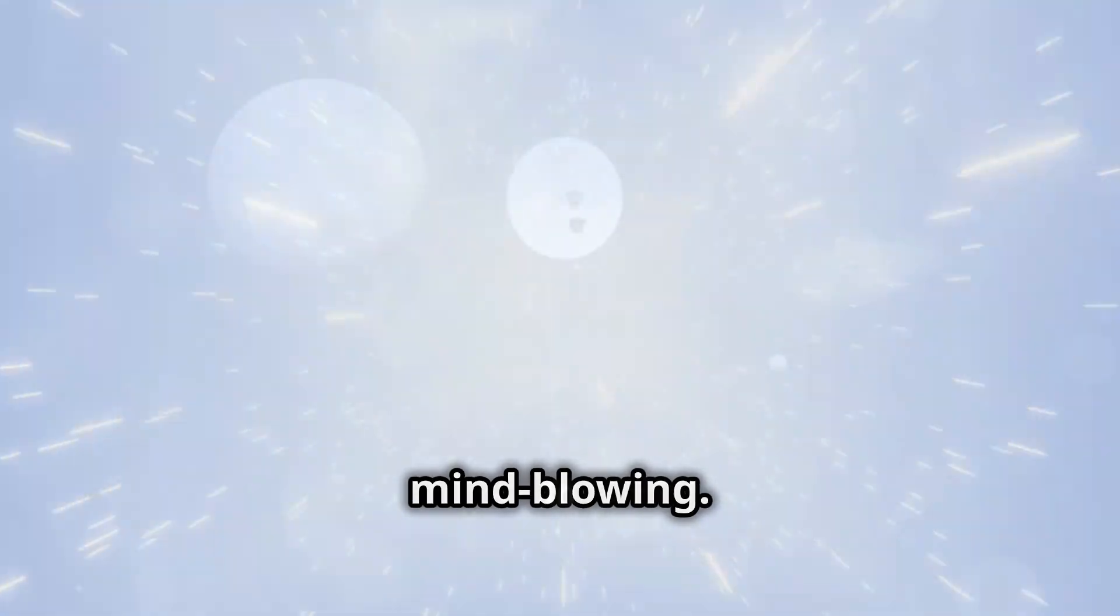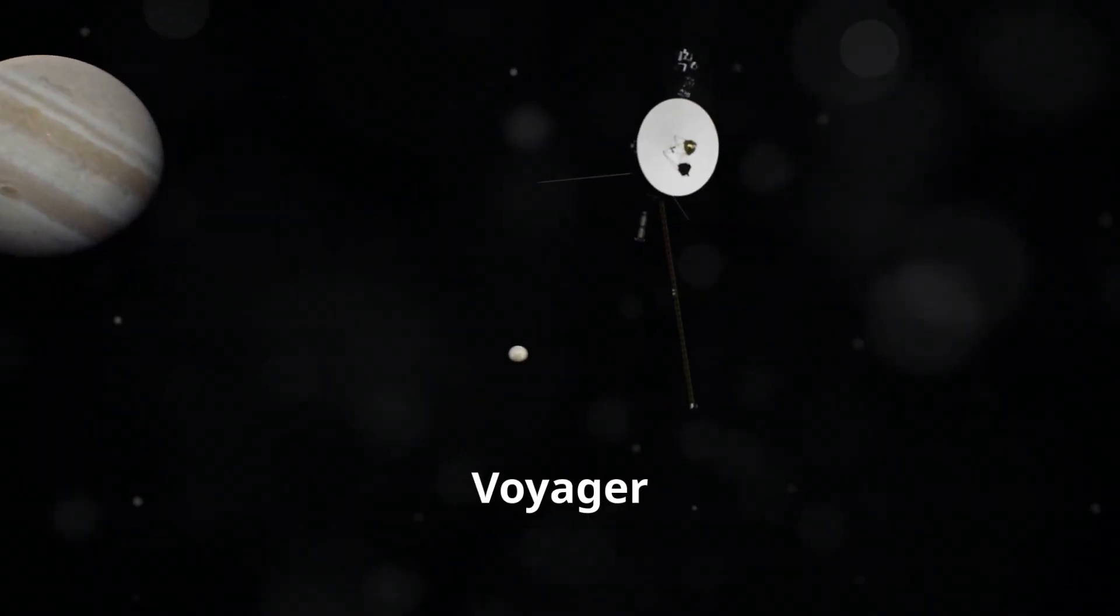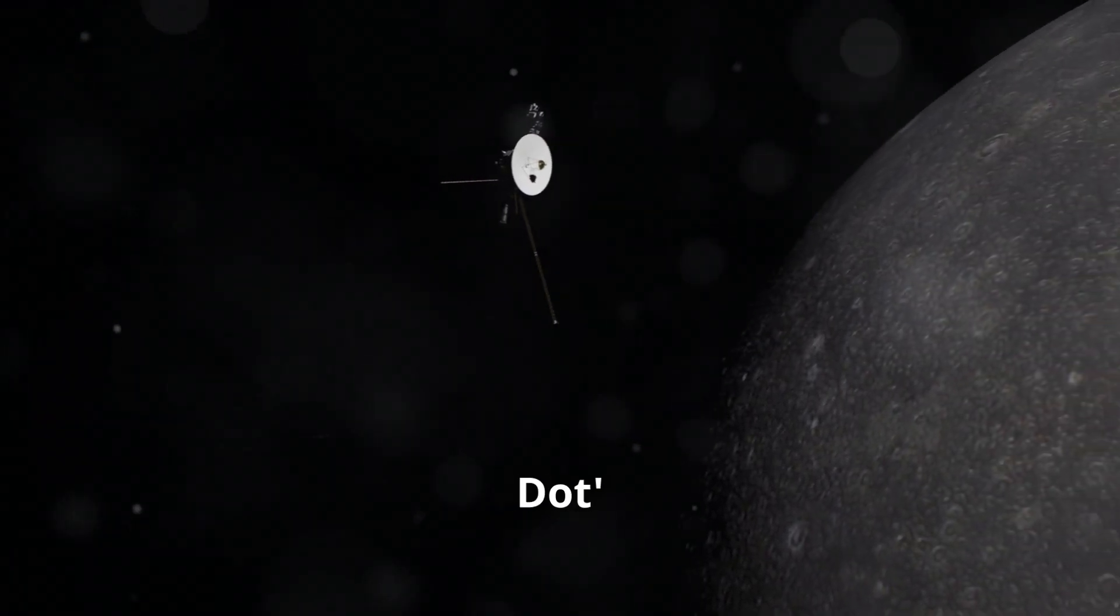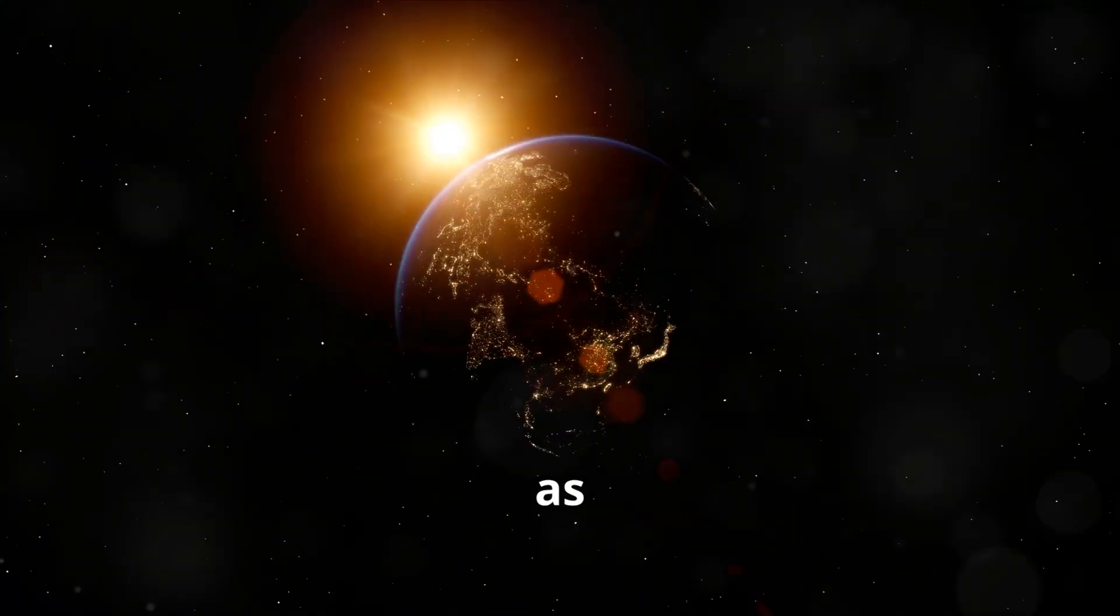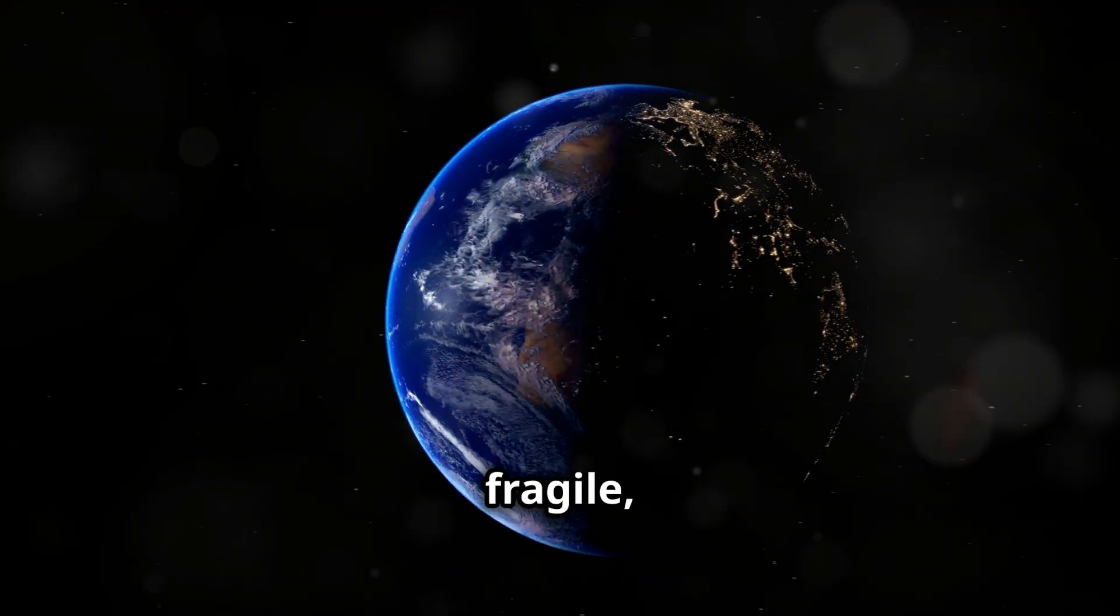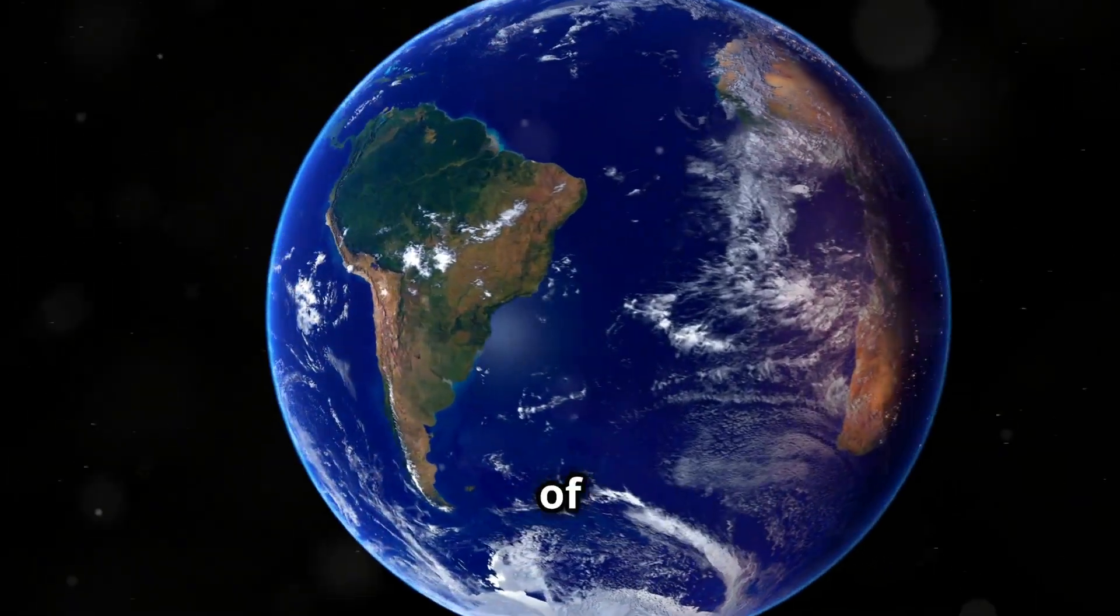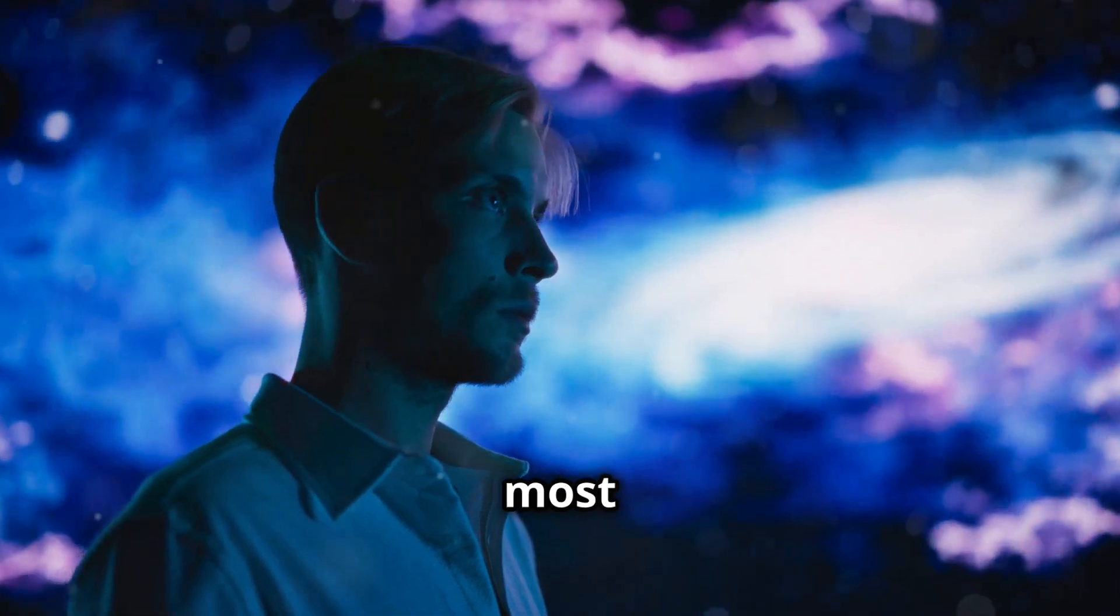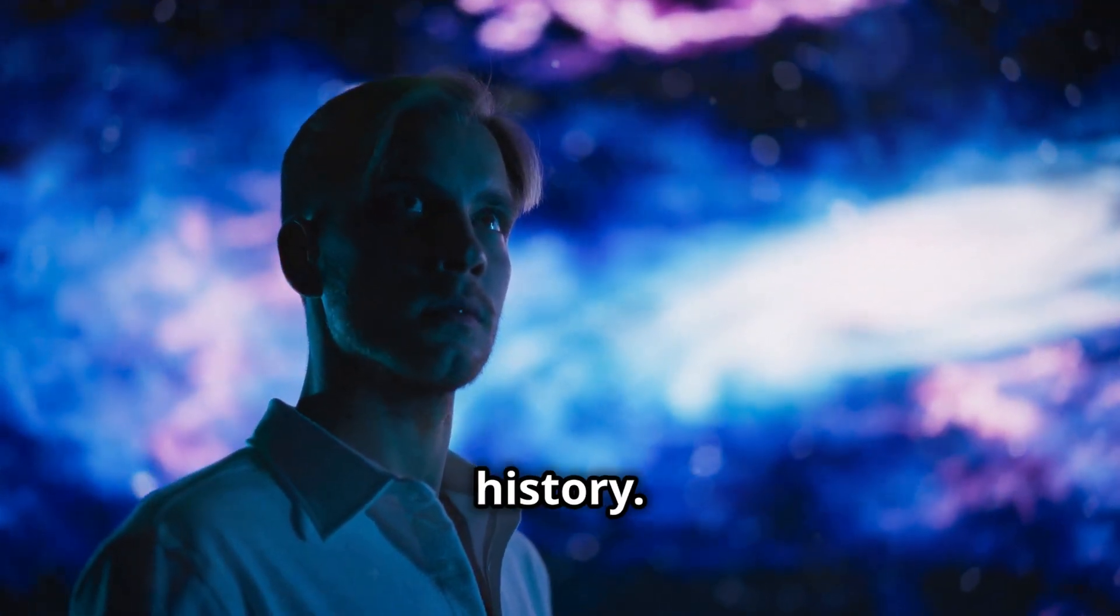In 1990, Voyager 1 turned its camera back toward Earth and captured the famous pale blue dot image. Earth appeared as a tiny speck suspended in a sunbeam, a fragile, lonely world in the vastness of space. Carl Sagan's reflection on this image remains one of the most profound pieces of writing in human history.